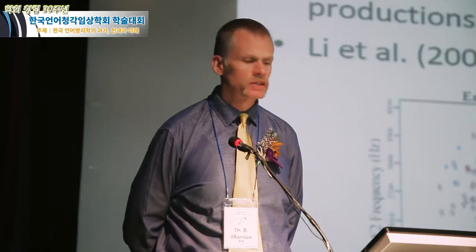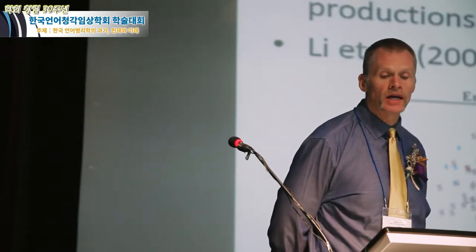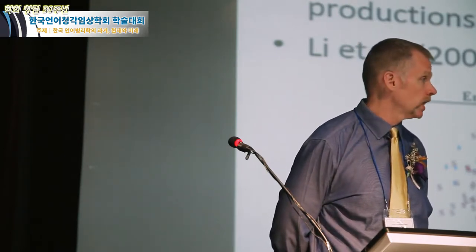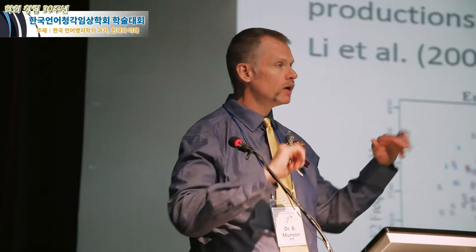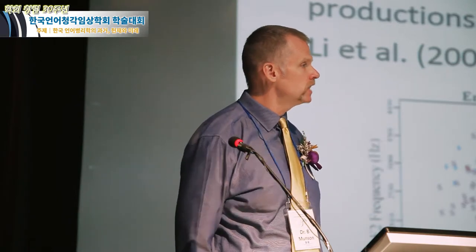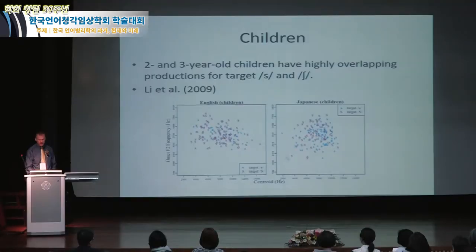When we look at children's productions — whether acquiring English in Ohio or Japanese in Japan — the acoustic characteristics of their target S and SH productions are, to use an English expression, all over the map. They aren't well separated into two clouds of data the way adult productions are. They vary in tongue position, anterior and posterior, and they vary in tongue shape.